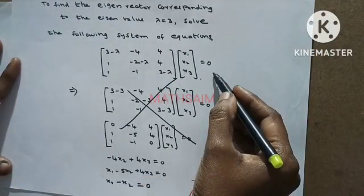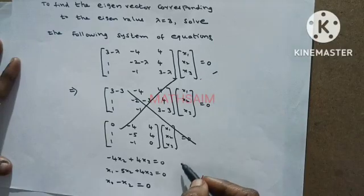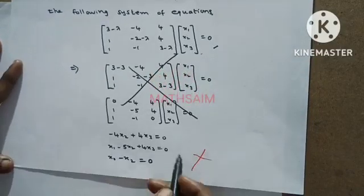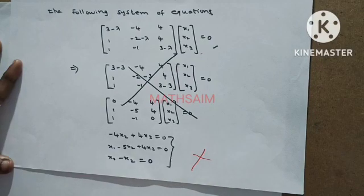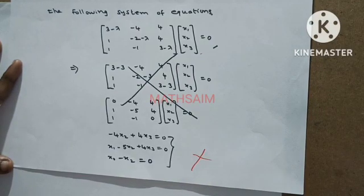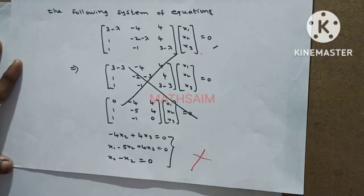First thing, A minus lambda I into x equal to 0, then you have to write any two equations, then you have to solve those equations and you will get eigenvector. But here, we are not going to use this usual method.